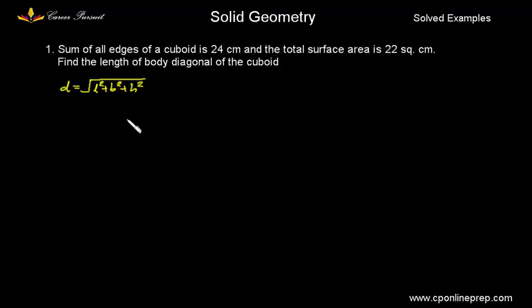Let us see what all things have been given. It is given that the sum of all the edges is 24 cm. So, how many edges are there? There are 12 edges. Each of this edge L, B and H would have been added 4 times. So, I have been given 4 times of length plus breadth plus height equal to 24. From this, I can easily find what is the sum of the length plus width plus height which is 6. So, let it be equation 1.